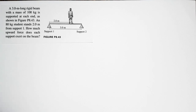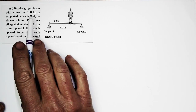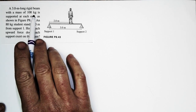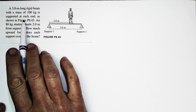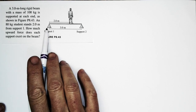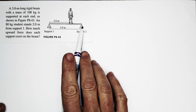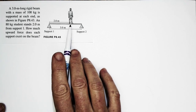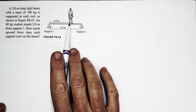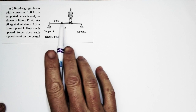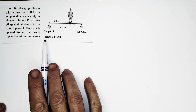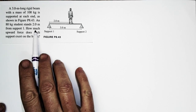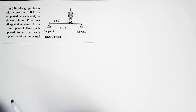Let's take a look at the situation. A 3-meter long rigid beam with a mass of 100 kilograms is supported at each end as shown in the figure. An 80-kilogram student stands 2 meters from support 1. How much upward force does each support exert on the beam?